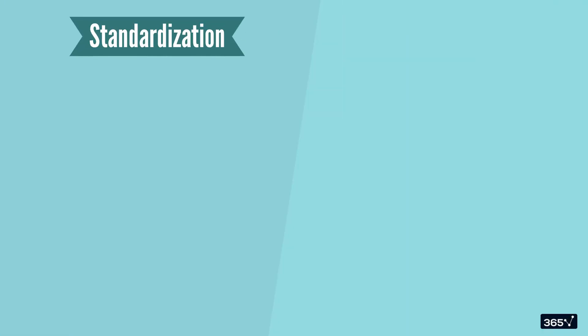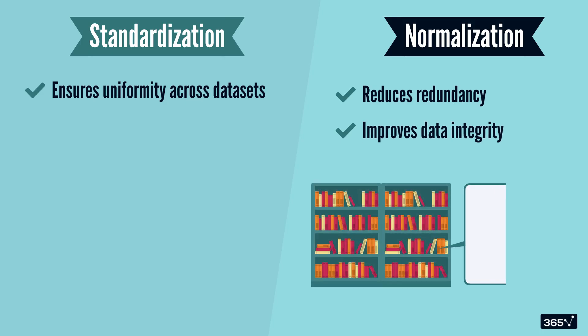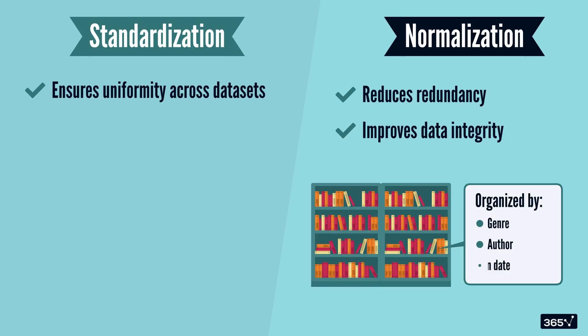Standardization ensures uniformity across data sets, while normalization reduces redundancy and improves data integrity. It's like organizing a library where books are sorted not only by genre, but also by author and publication date, making it easier to locate the exact book you need.